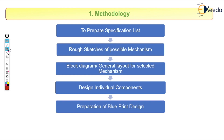Now the first step is to prepare a specification list. Taking the example of an elevator or lift: once we know we are going to design a lift, we prepare a specification list. This includes where we are going to use the lift, what should be its capacity, what should be its dimensions and height, and what material we are going to use. That all comes under the preparation of a specification list.